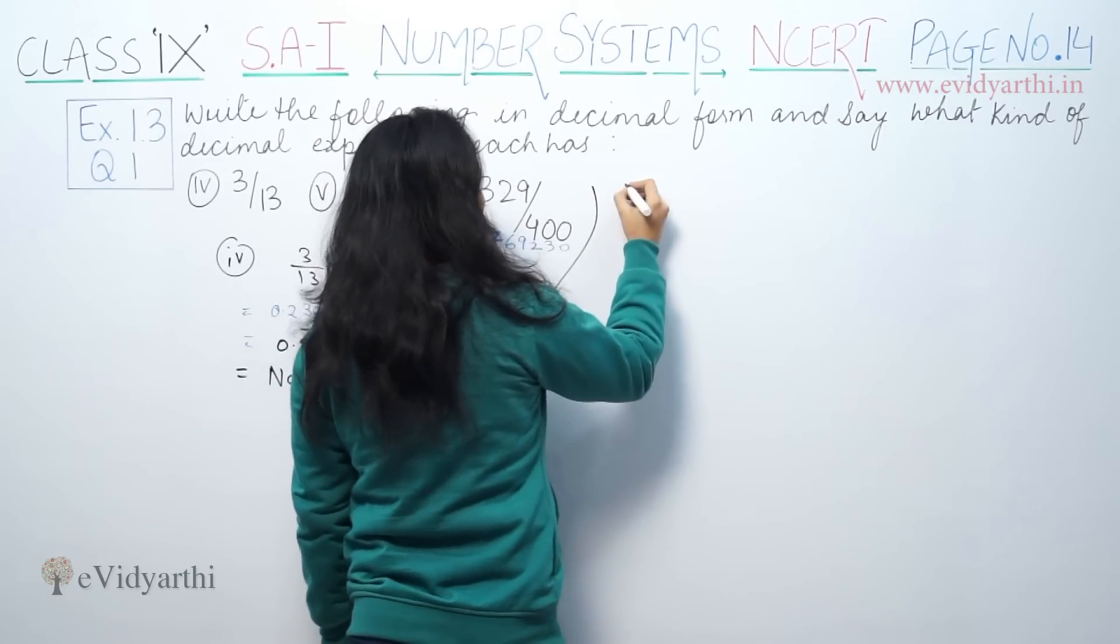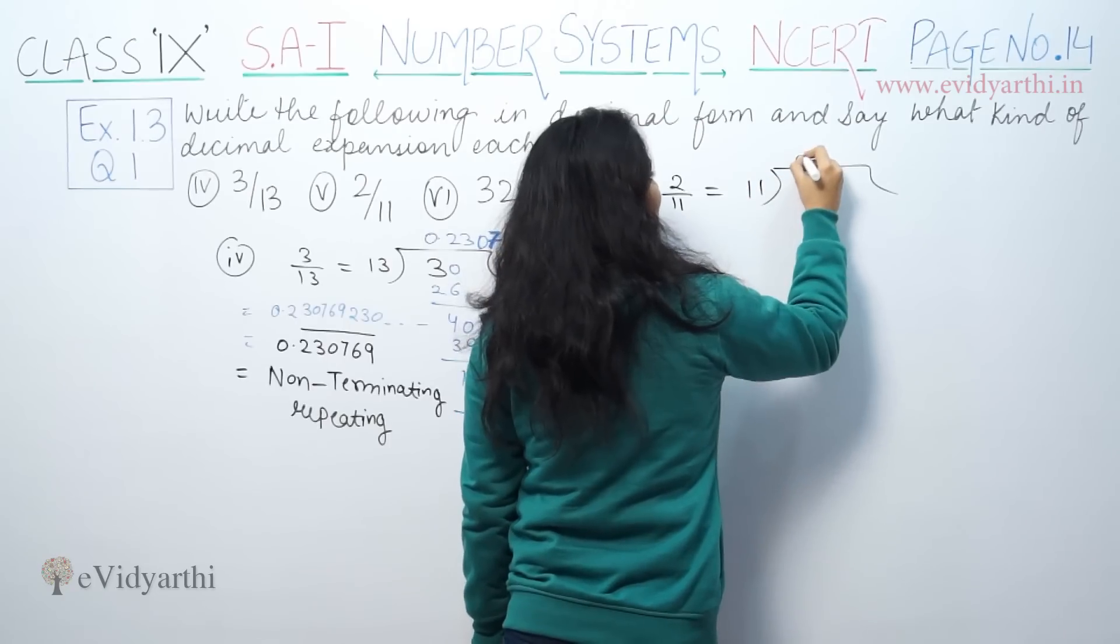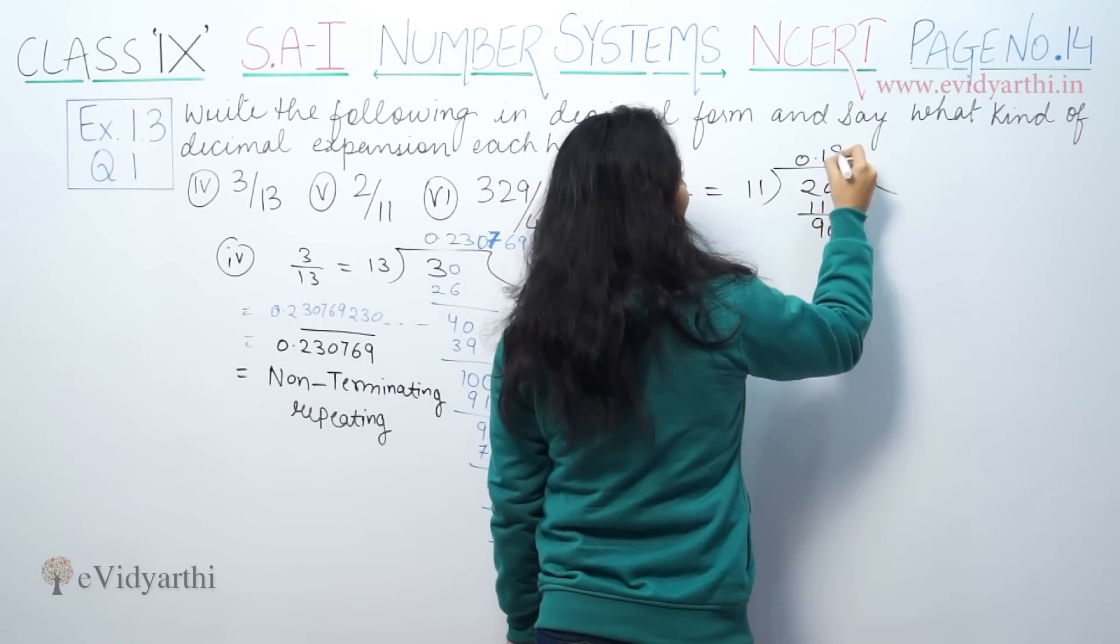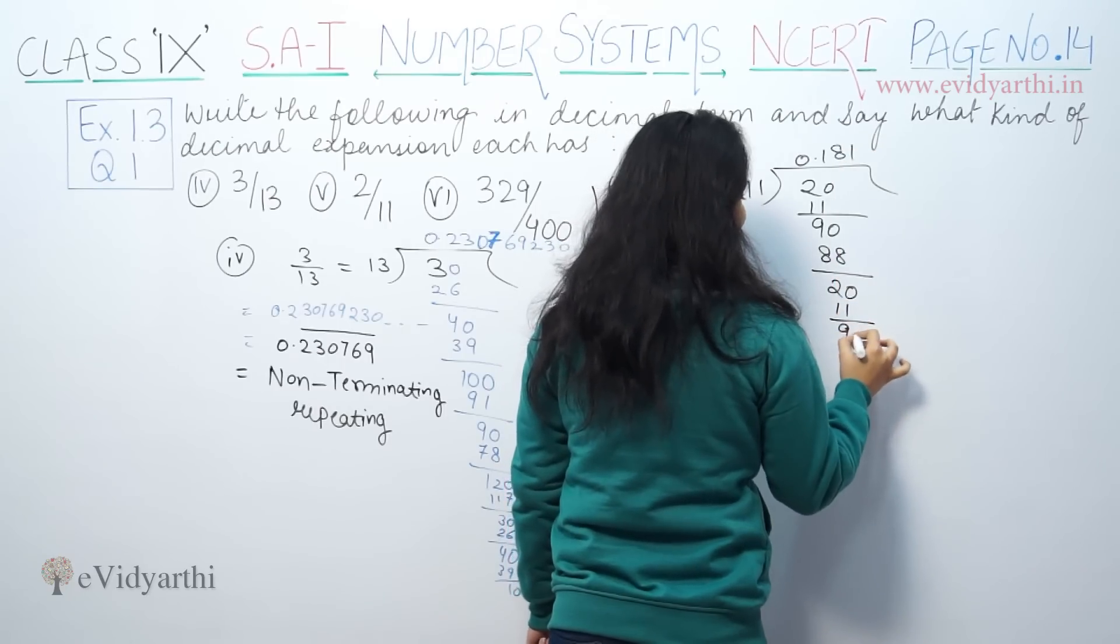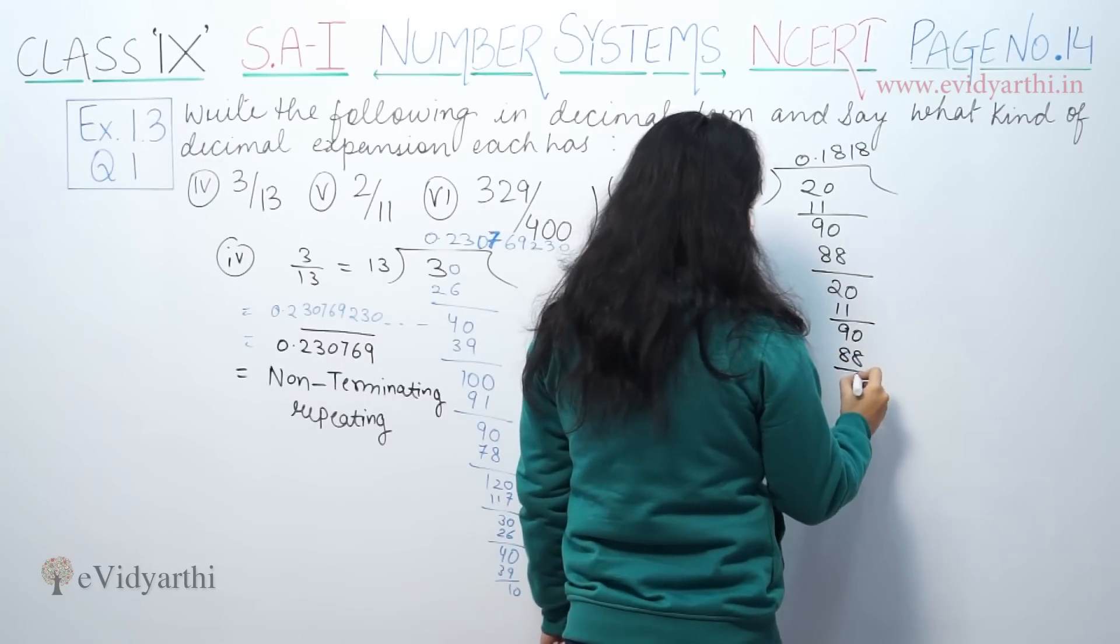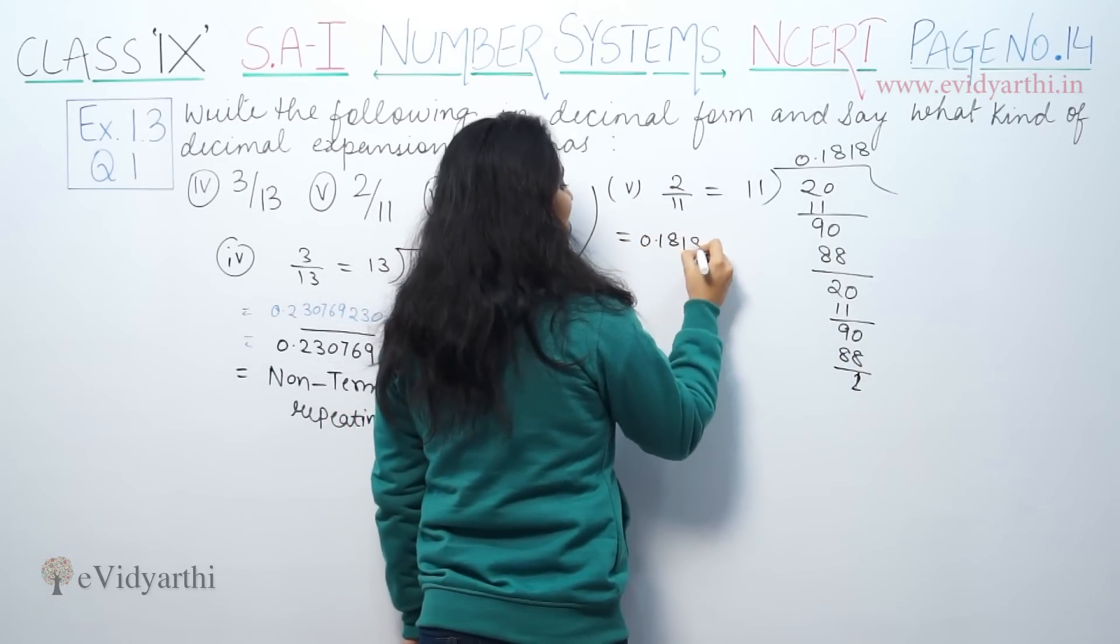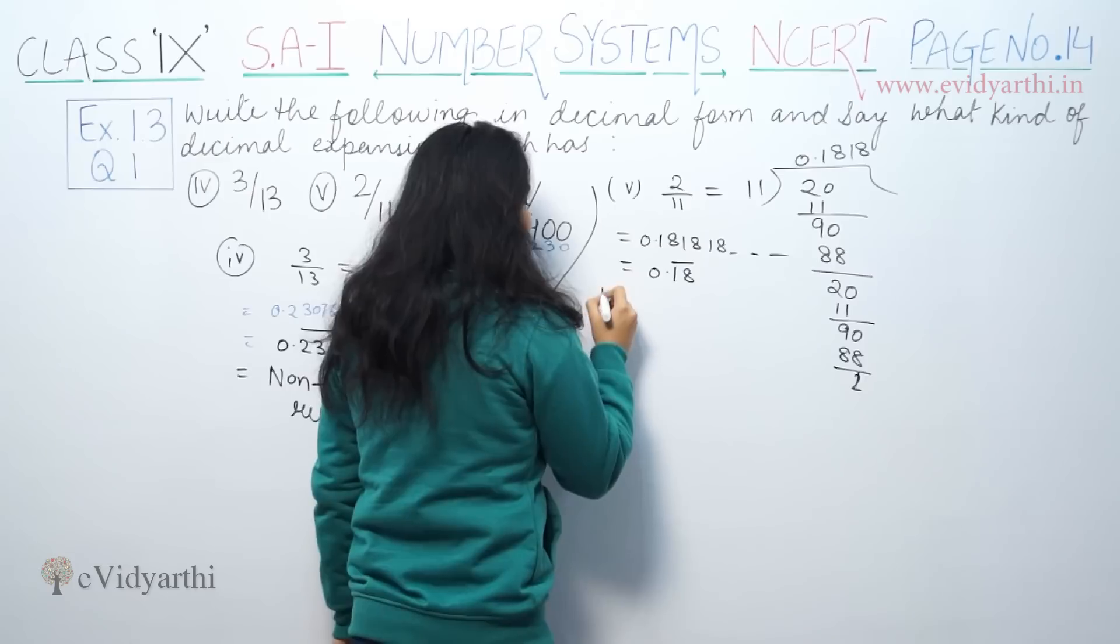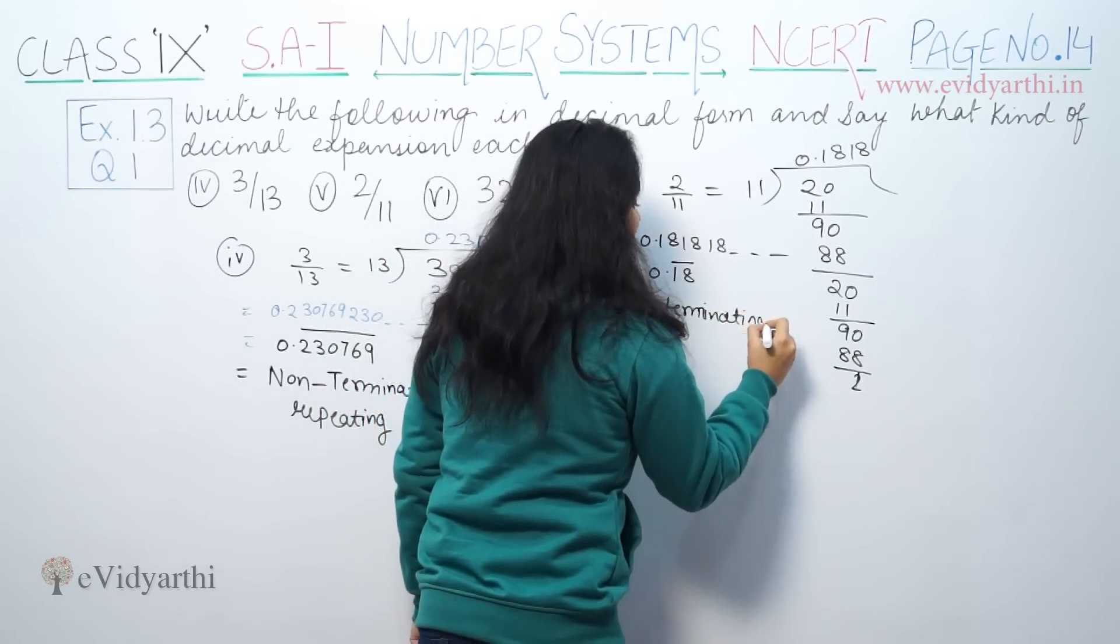Then part number 5, which is 2 by 11. Now we divide 20 by 11. 11 is 11, remainder 9. 11 8 times is 88, remainder 2. Again 11 is 11, remainder 9. Again 11 8 times is 88. That's the same thing repeating. So we have 0.181818 and so on. So this is 0.18 repeating. So this has a non-terminating repeating decimal expansion.